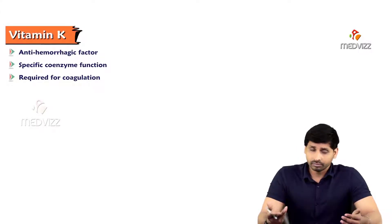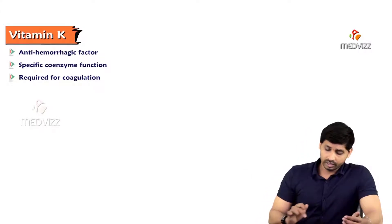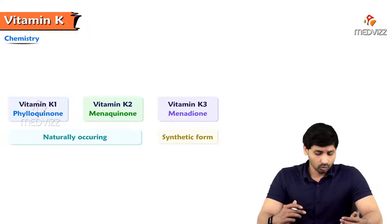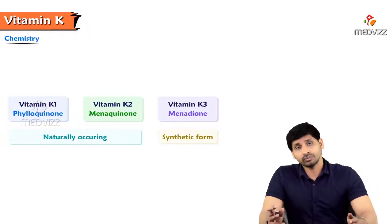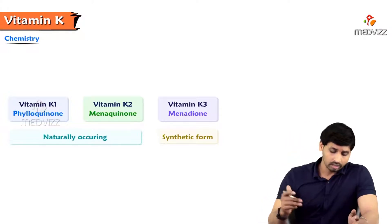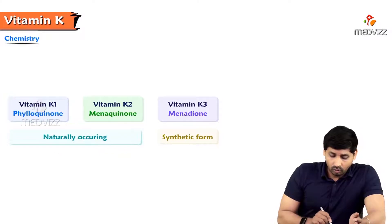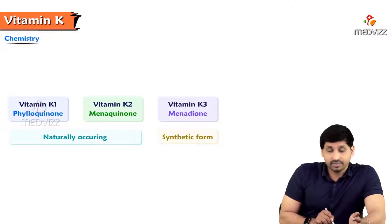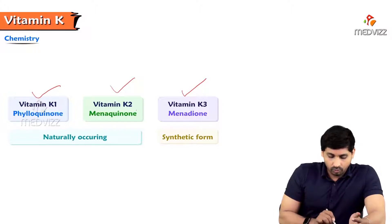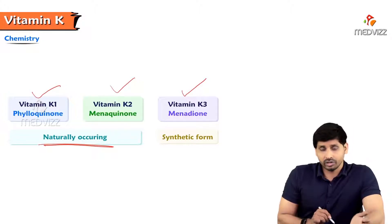Vitamin K is required for coagulation. In terms of chemistry, vitamin K is of three types: phylloquinone, menaquinone, and menadione. Vitamin K1 is known as phylloquinone, vitamin K2 is menaquinone, and vitamin K3 is menadione. Vitamin K1 and K2 - phylloquinone and menaquinone - both are naturally occurring in food substances in nature.